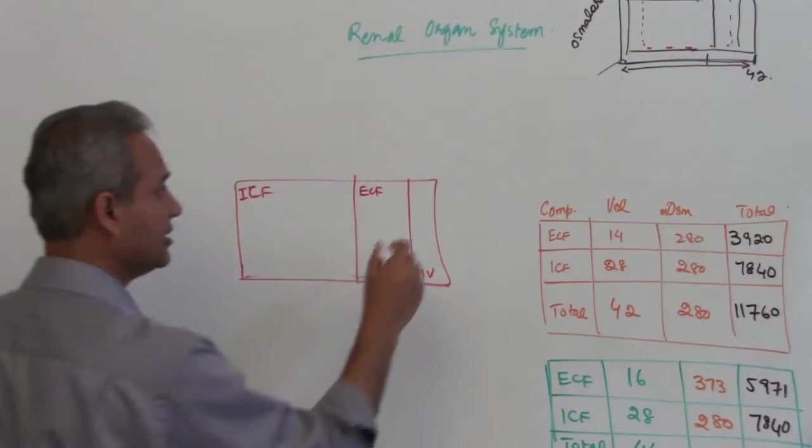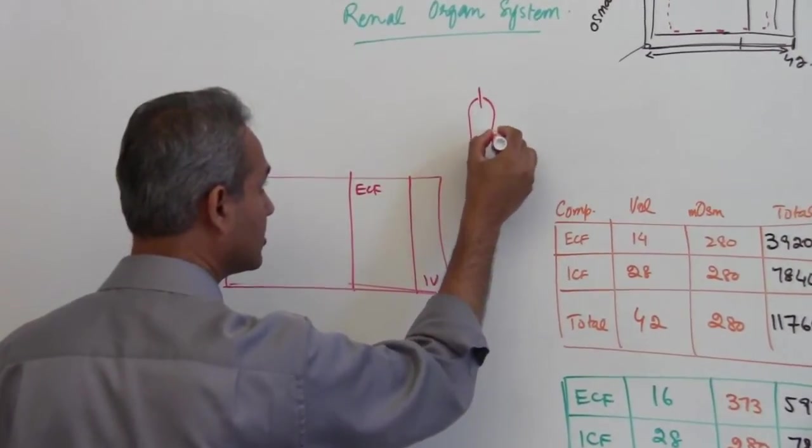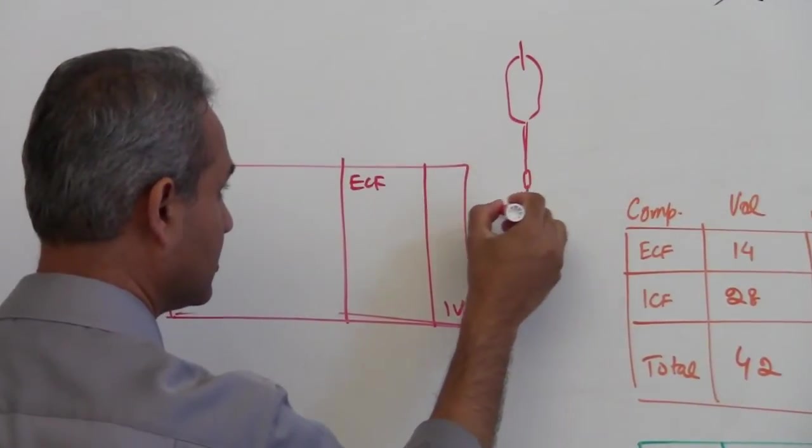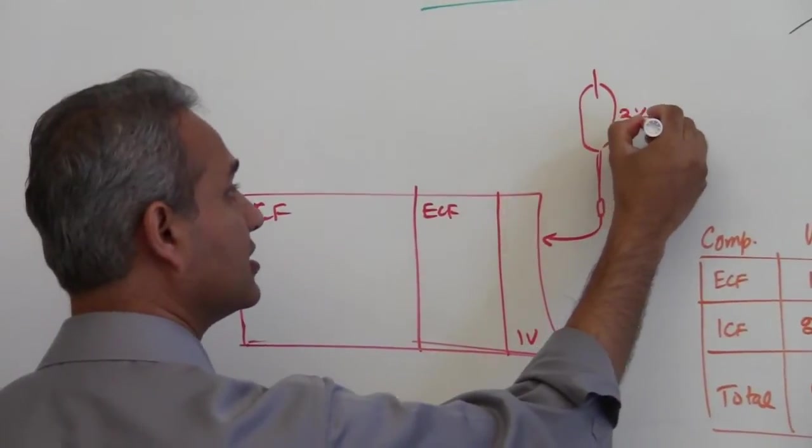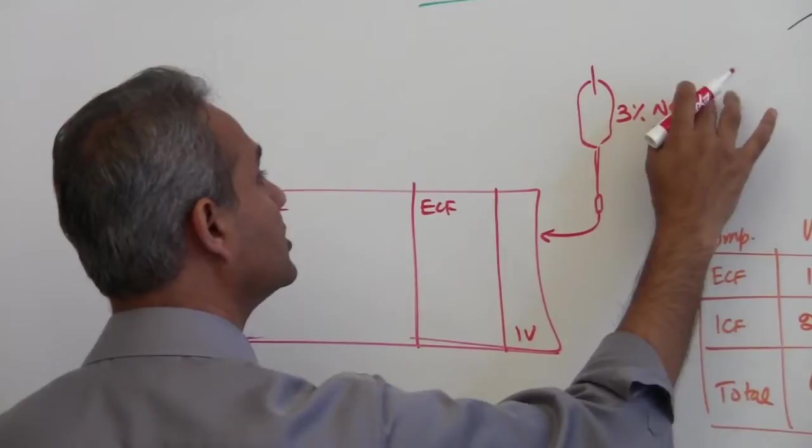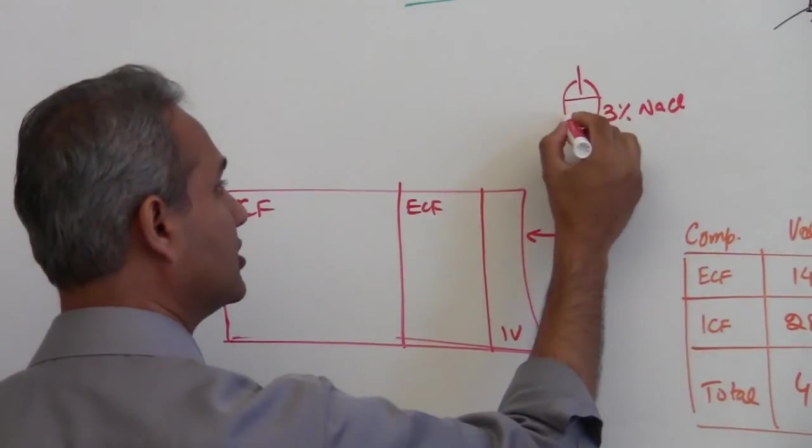And what we are doing is we are going to be hanging up a drip and we will be adding 3 percent sodium chloride solution to his intravascular compartment.